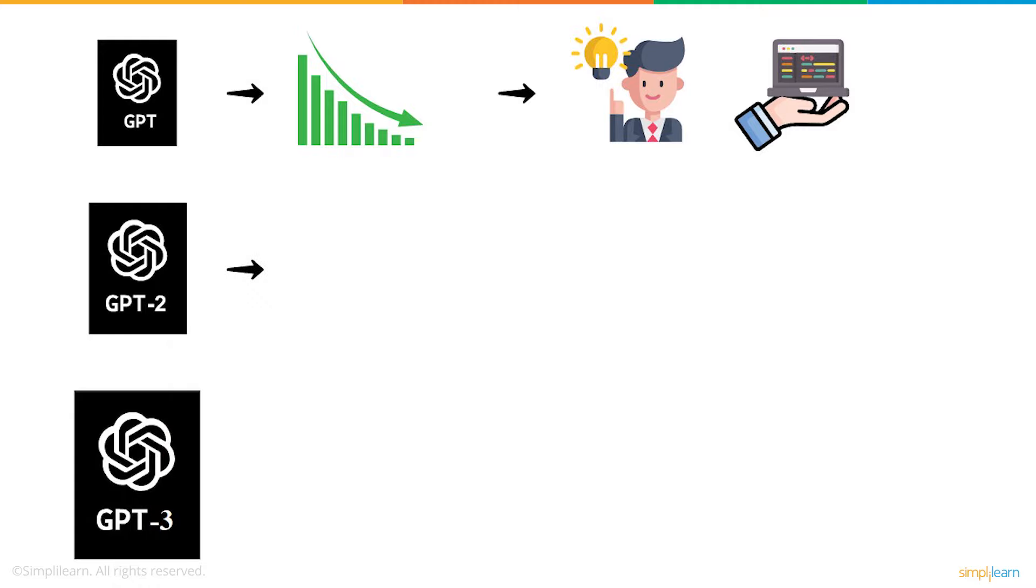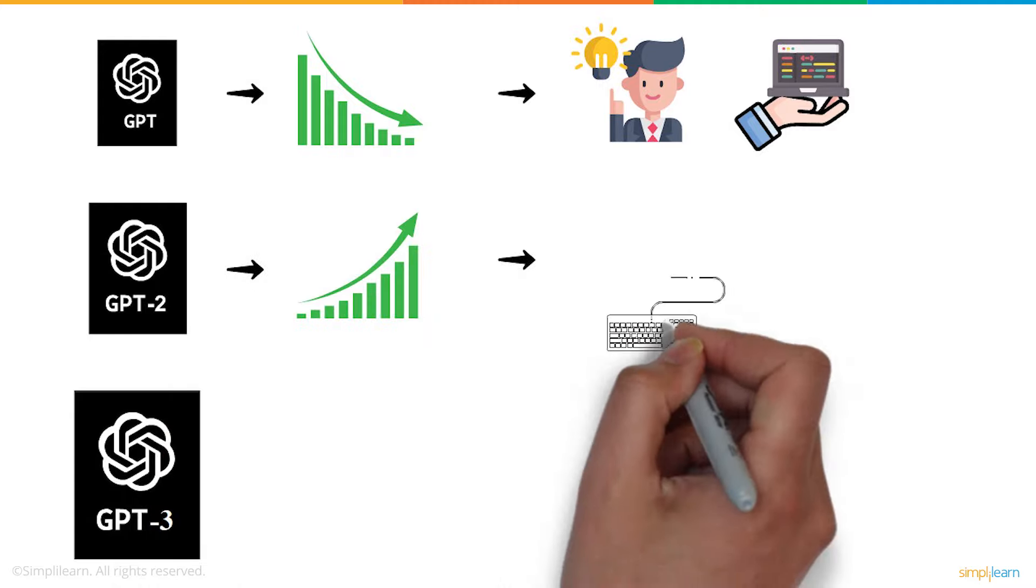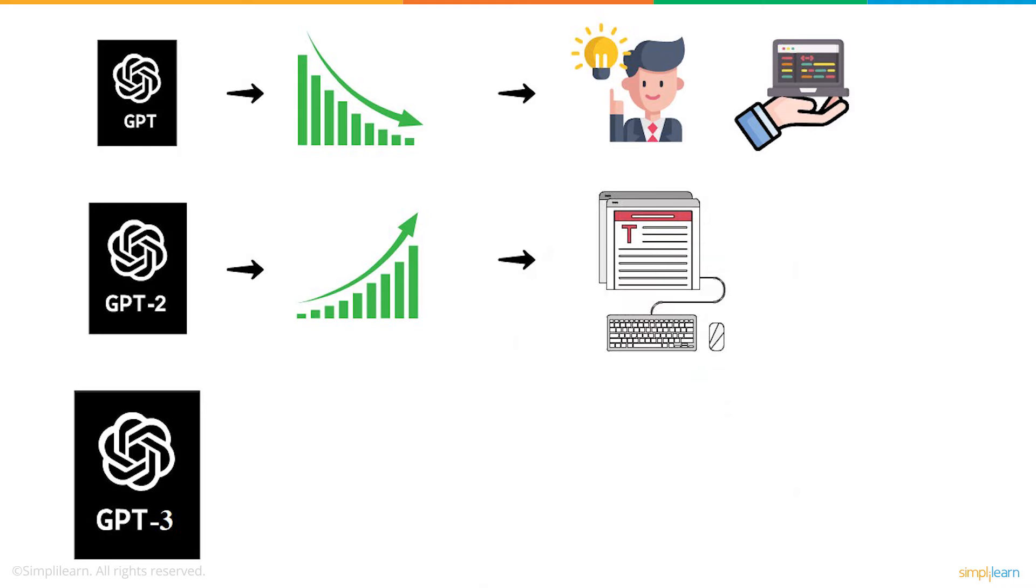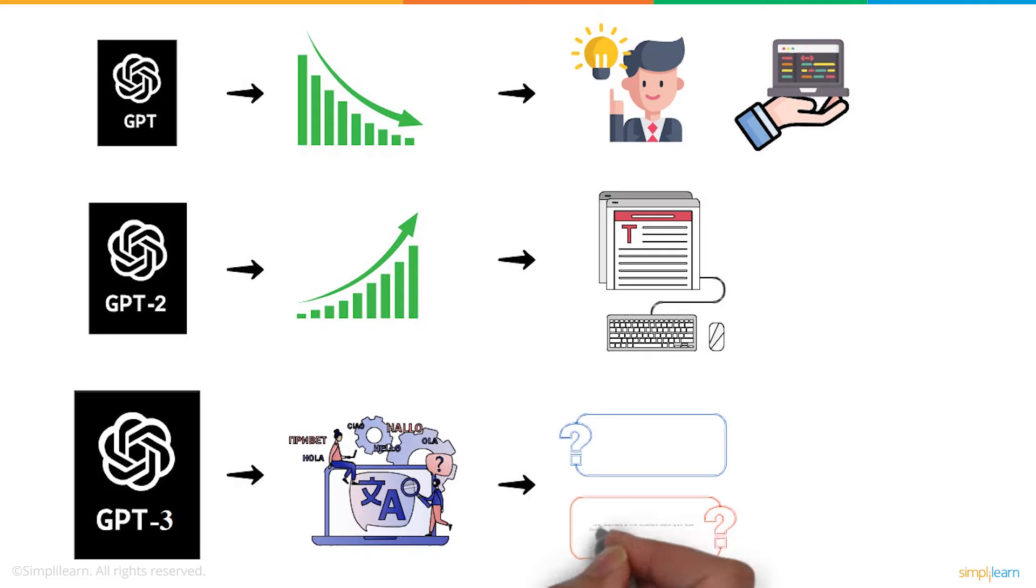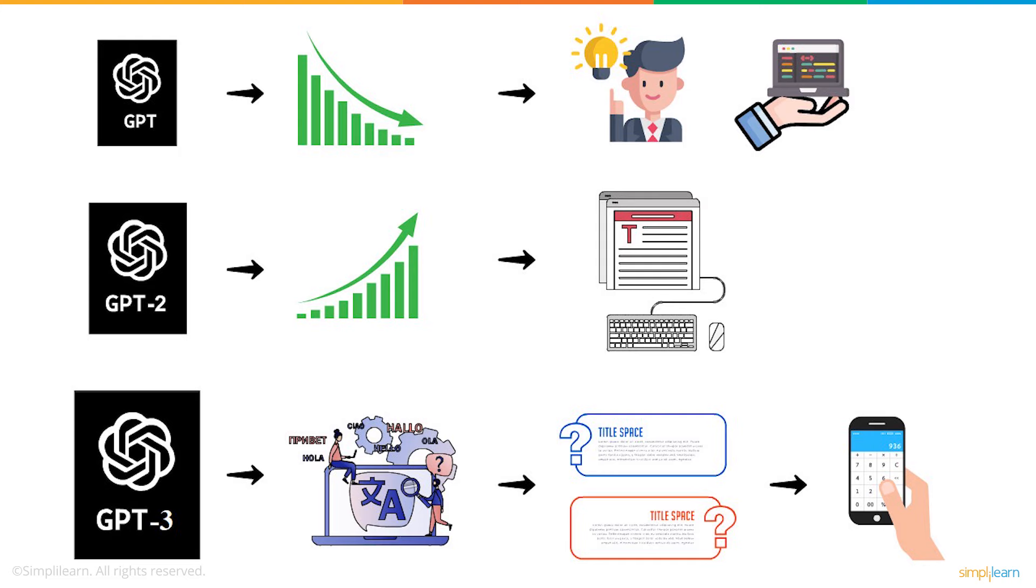But after the introduction of GPT-2, it gained a lot of attention as it could accurately predict the word that would begin a text. Then they introduced GPT-3, which is a strong language model, achieving translation, question answering, and performing three-digit arithmetic.